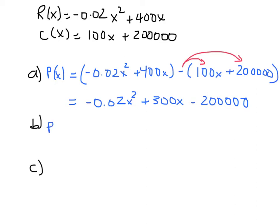The marginal profit function then is the derivative of that, which is going to be -0.04x + 300.